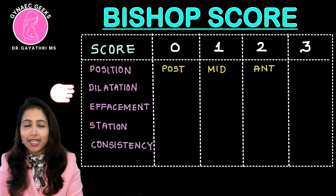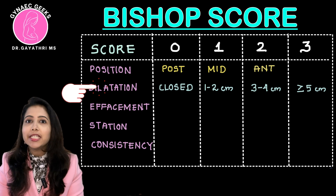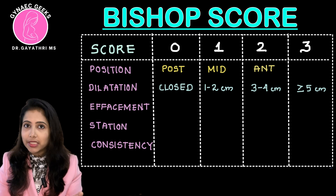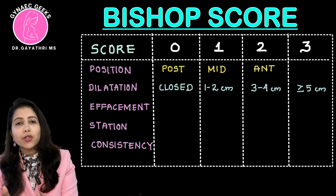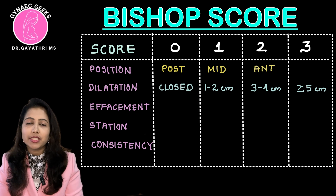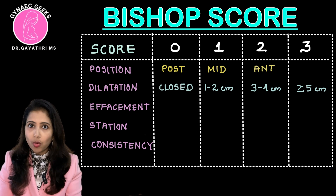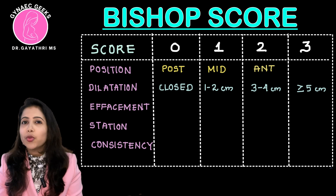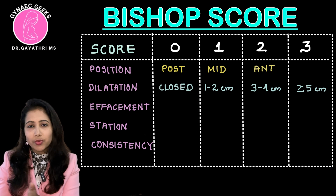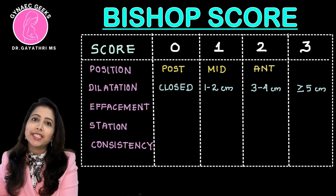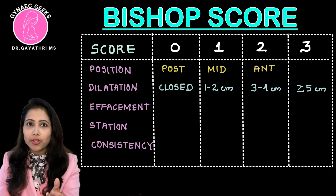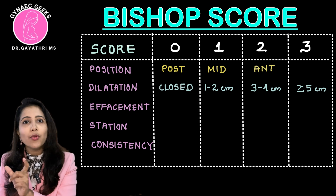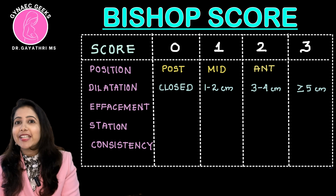Next is dilatation. Dilatation can be closed (score 0), 1 to 2 cm (score 1), 3 to 4 cm (score 2), and 5 to 6 cm (score 3). You can remember this as 2 cm per score increment: 1–2, 3–4, 5–6 cm.